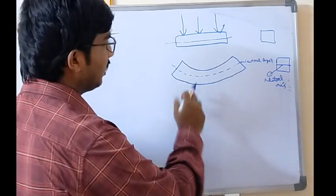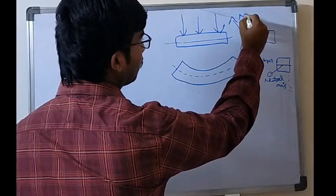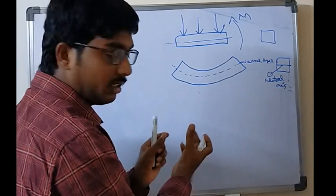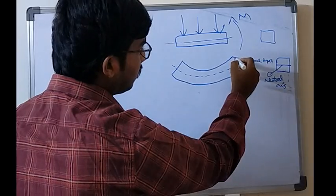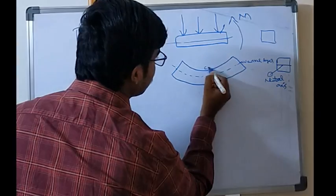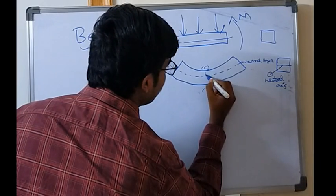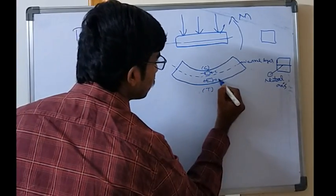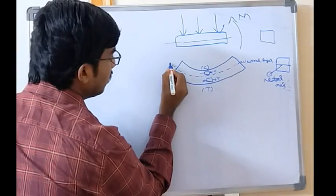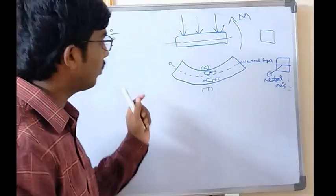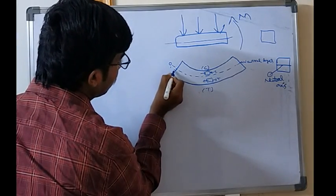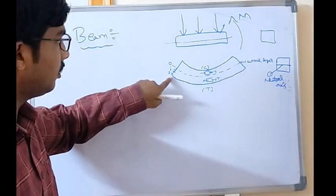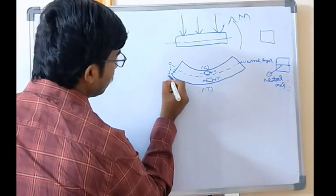The beam bends due to this bending, and there will be a bending moment. Due to this bending moment, you can see — like a pack of cards bending — the topmost fiber will be subjected to compressive stresses and the bottommost fiber will be subjected to tensile stresses. You can see a small element here: compressive stresses on top, tensile stresses on the bottom. The neutral layer will be subjected to zero stresses — there will be no stress on the neutral layer. For example, the bottommost fiber is subjected to tensile stress of magnitude three newtons.